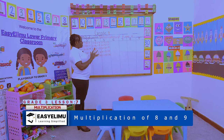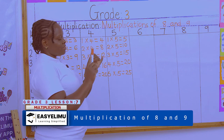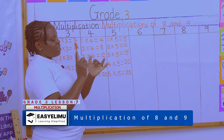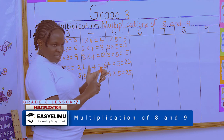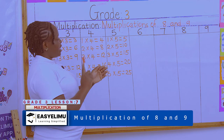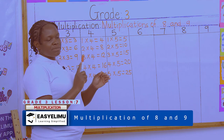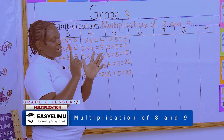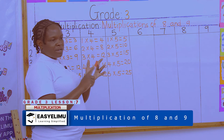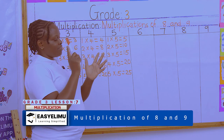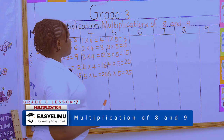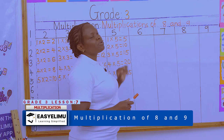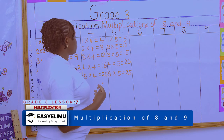Each finger represents 5. So counting on fingers: 5, 10, 15, 20, 25. That means 5 × 5 = 25. Now let's look at the multiplication table for number 6.